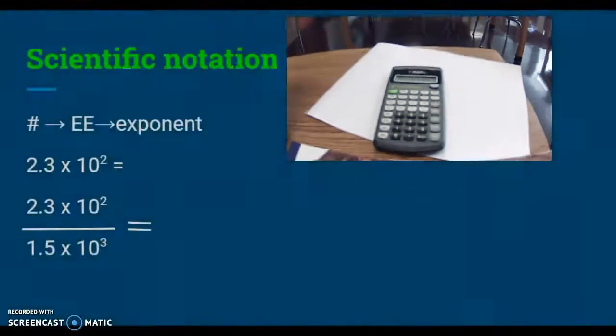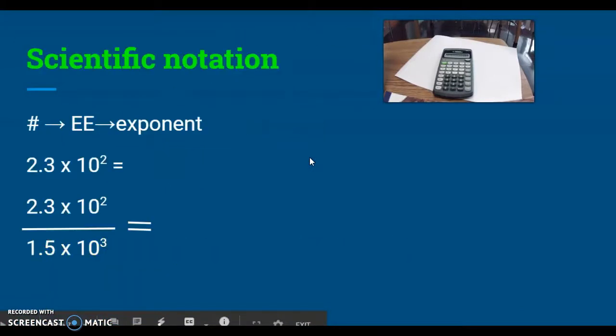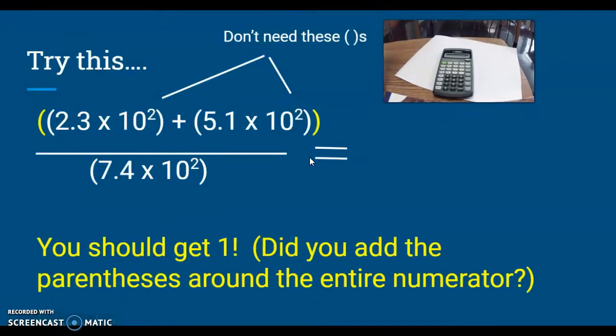Here is a little problem just so you practice using your parentheses. In this particular calculator, you don't have to use the parentheses as often as you do in some of the other ones, but you definitely need it. In this case, we're taking 2.3 times 10 to the second plus 5.1 times 10 to the second, and then we're dividing it by 7.4 times 10 to the second. It needs to know to do this addition first, so we need to use these parentheses that I have written in yellow.